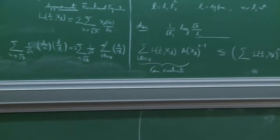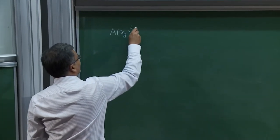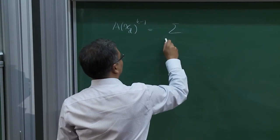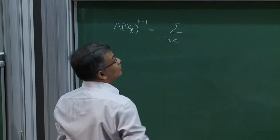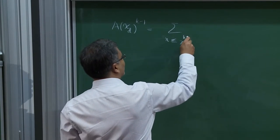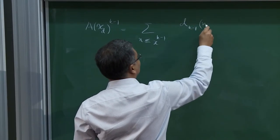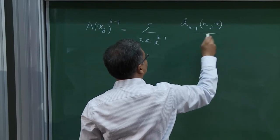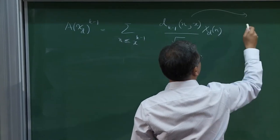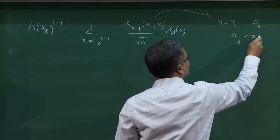Let's look at the left-hand side first. I can expand out A_chi_d to the k minus 1. It will be a sum over n up to x to the k minus 1 of some kind of divisor function — let's call it d_{k-1}(n) times chi_d(n) over root n — which counts the number of ways of writing n as a product a_1 through a_k where the a_j are at most x.